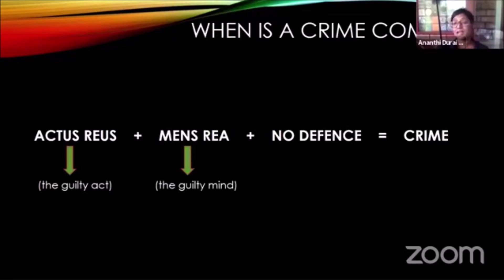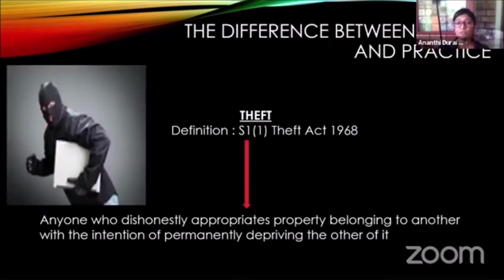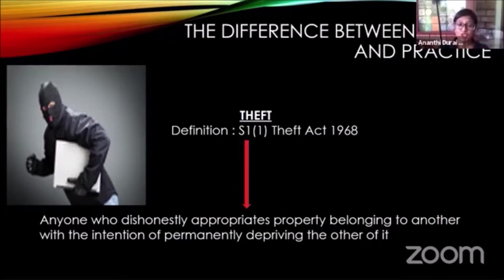You will need to know: what is the actus reus of a crime? What is the mens rea? And are these requirements satisfied in any given situation? Let me give you an example of this difference — the difference between theory and practice — which I use very often because it shows very clearly the difference between what we're studying and the actual practice of criminal law.